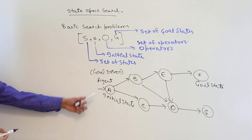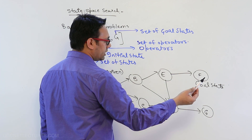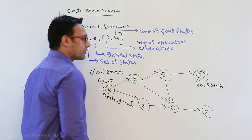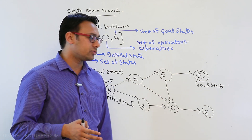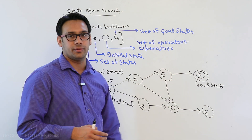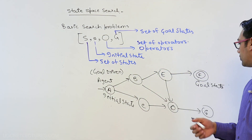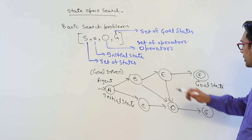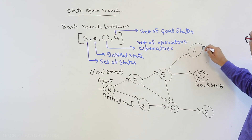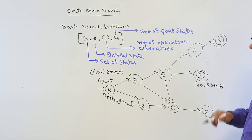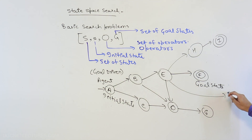From the start location, we want to reach the goal state. I represent the goal state using a double circle — the same notation used in theory of computation — because it is easy to follow. It can happen that there is more than one goal state, and it can also happen that there are more than one paths to reach a certain goal state.